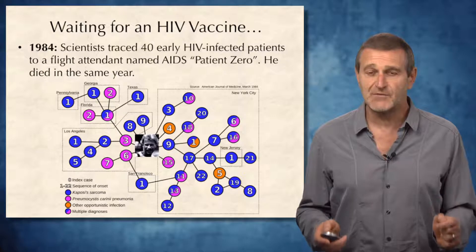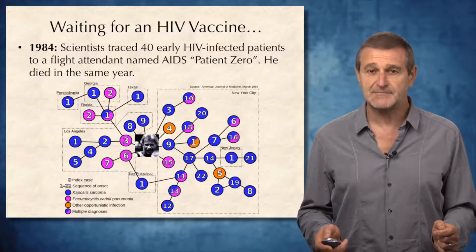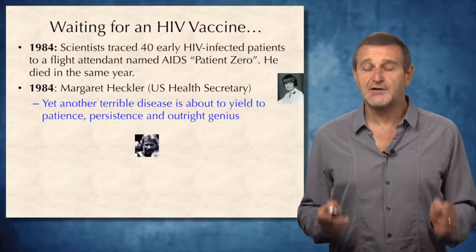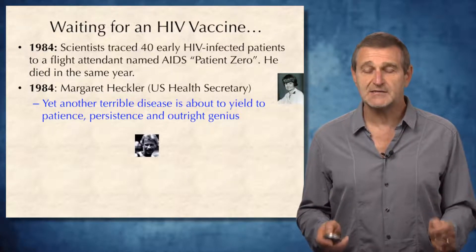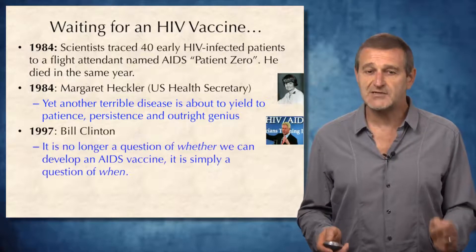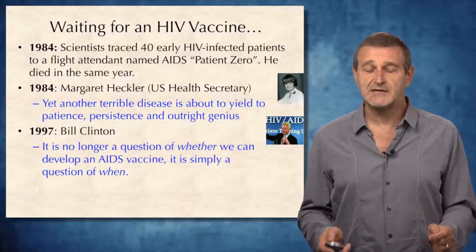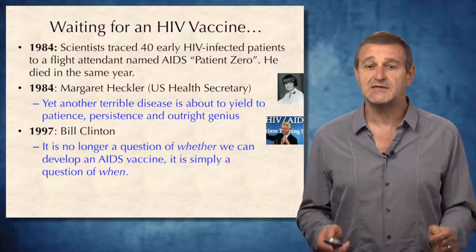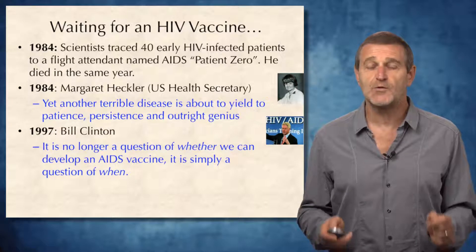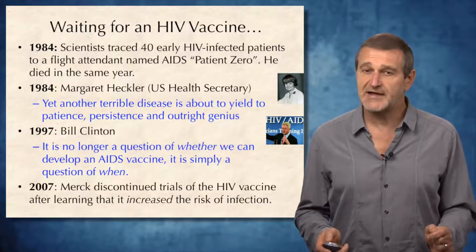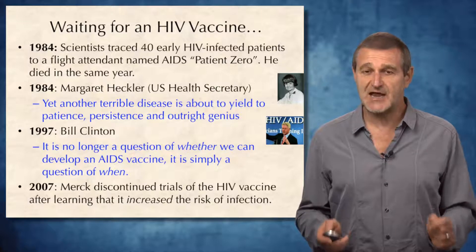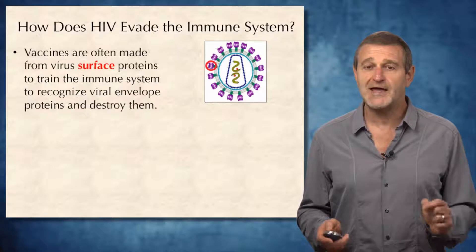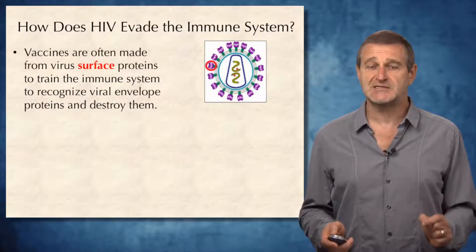Of course, he was not the first HIV patient. In the same year, U.S. Health Secretary Margaret Heckler announced that an HIV vaccine was about to be developed. Thirteen years later, Bill Clinton said it's no longer a question of whether we can develop an AIDS vaccine — it is simply a question of when. We still don't have an HIV vaccine today, and to understand why, it's important to figure out how HIV evades the human immune system.